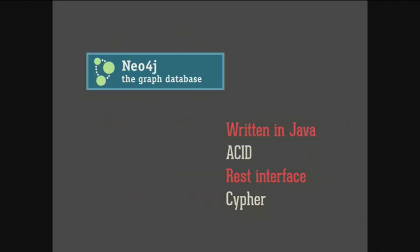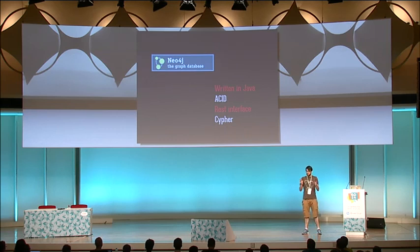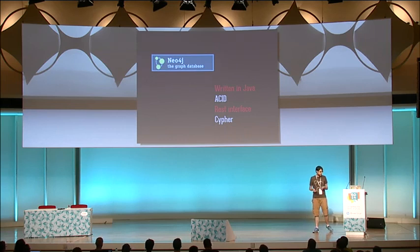Neo4j is a graph database written in Java. It provides ACID transactions, a REST interface, and Cypher — a declarative language to query the database. It's open source and it's a NoSQL database.